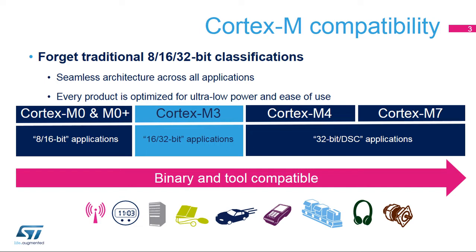The Cortex-M4 core benefits from the powerful performance of its 32-bit processor architecture and particularly high level of deterministic processing, while the Cortex-M0 Plus core manages the real-time radio operations.